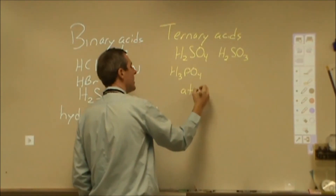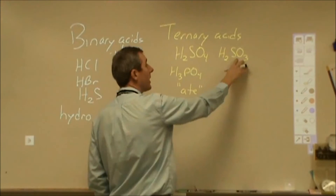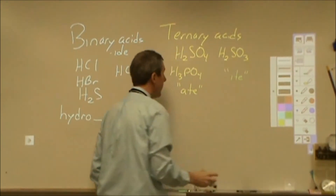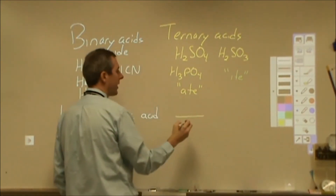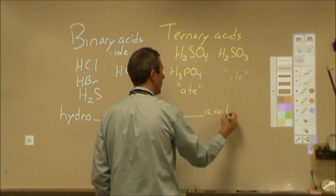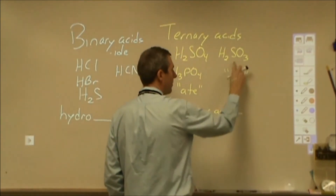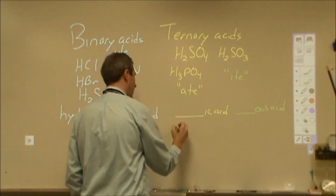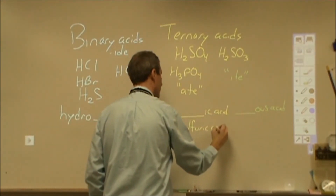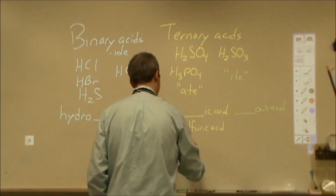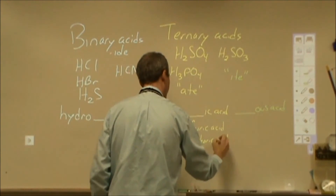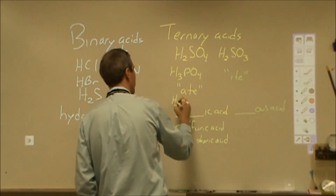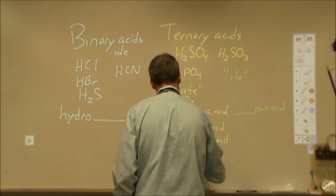If your polyatomic ion ends in '-ATE' — so here you can see phosphate, sulfate — that's going to come out differently than if it ends in '-ITE.' If it ends in '-ATE,' you're going to take the stem from the polyatomic ion followed by '-ic acid.' So sulfate will become sulfuric acid, and phosphate will become phosphoric acid. A couple more examples: H₂CO₃ — carbonate will become carbonic acid.